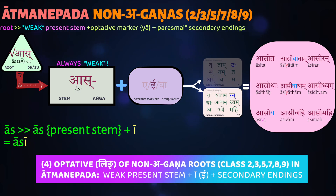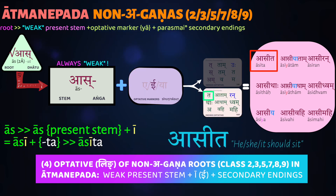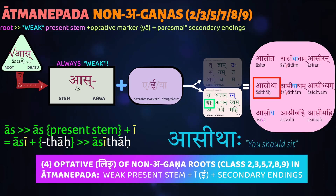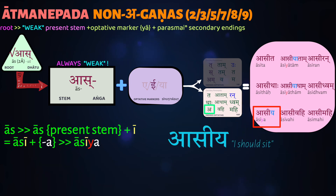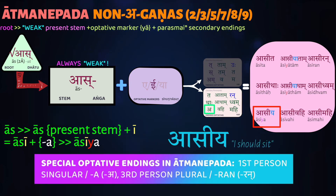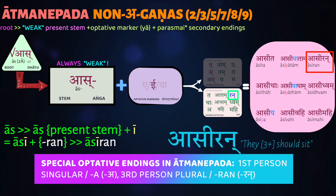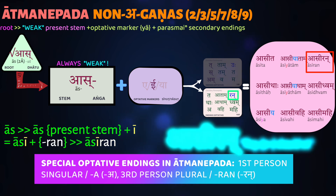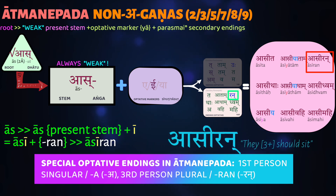Finally, for non-a-ganas in the atmanepada, we again take the weak stem — always use the weak stem — but now you add the optative marker long yi, then add the secondary atmanepada endings. Take the verb as, class two, meaning to sit. We take the weak stem as, add the optative marker long yi — asii — then add the atmanepada secondary ending: saha asita — he should sit, he may sit, he ought to sit; you ought to sit; aham asiya — I should sit. Note the special optative ending for first person singular in atmanepada. The third person plural uses ran as the ending: asiran — they should sit, they ought to sit.